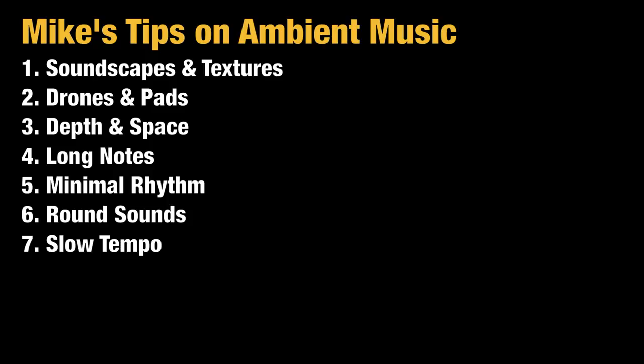Third is depth and space — lots of deep reverb, which goes really well with ambient music. Fourth is using long notes for chords; if you use chords, let them sustain much longer than usual. I would actually avoid writing real melodies in ambient music unless you use really long notes. Fifth is minimal rhythm — basically no percussion, no ostinatos, perhaps a slow pulse, but very minimal rhythmic focus.